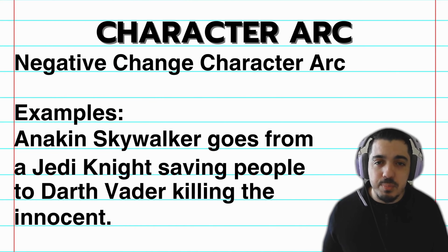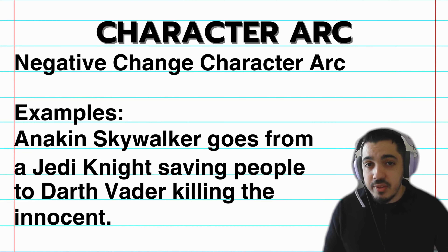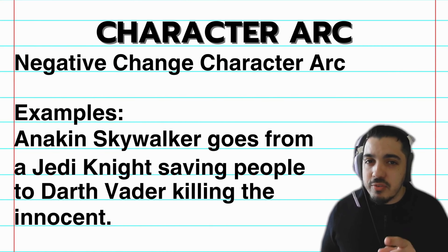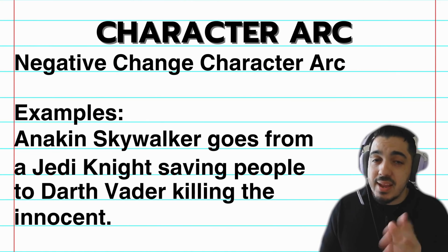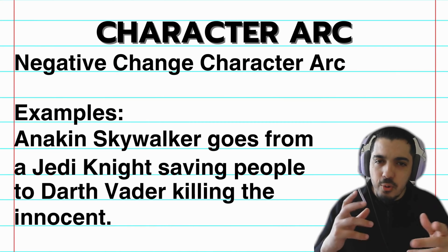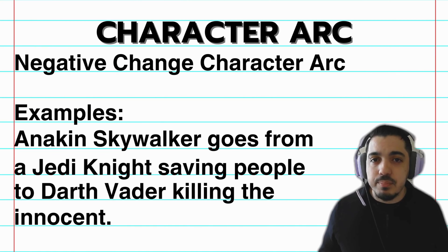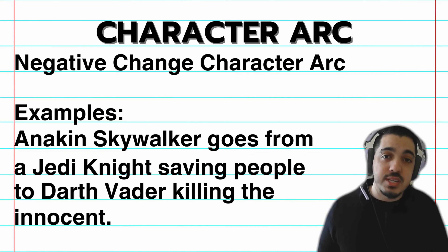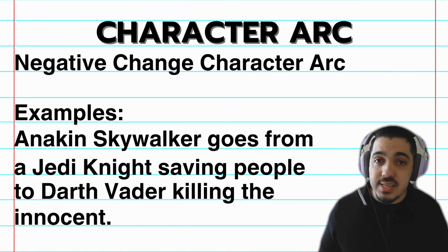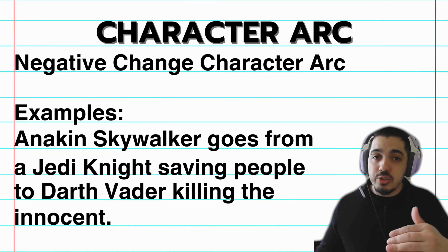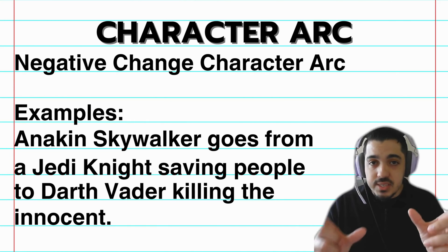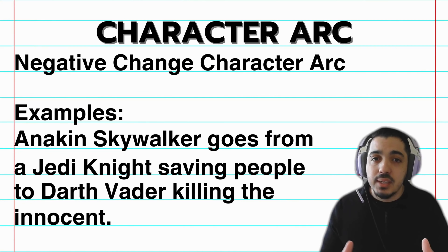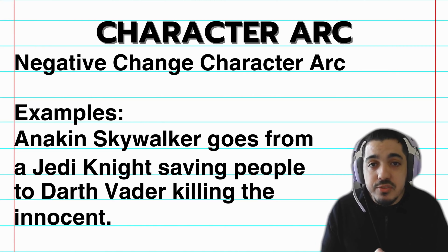Anakin ends up killing many innocent people and Jedi, set on a destructive path. But if we look at positive change again — Darth Vader goes from evil in A New Hope through Empire Strikes Back, and by Return of the Jedi he's already changing, getting to know his son. He ends up becoming good at the very end, saving his son Luke and ultimately the galaxy. So Anakin Skywalker goes through both a negative and a positive change — across six movies, he's a perfect example of both arcs.